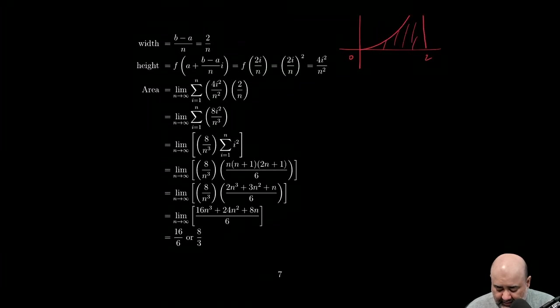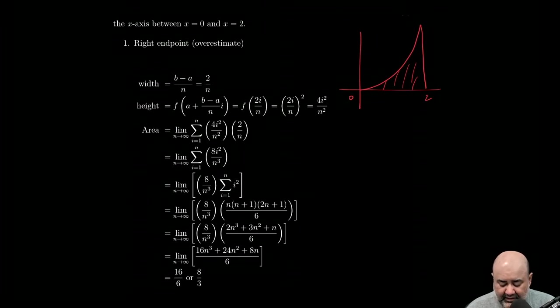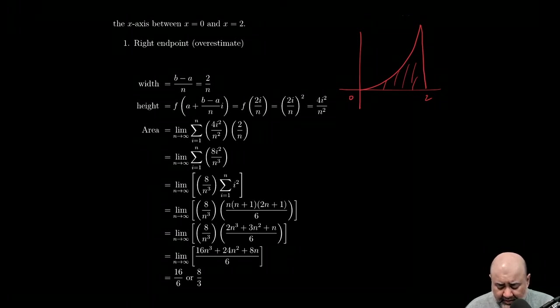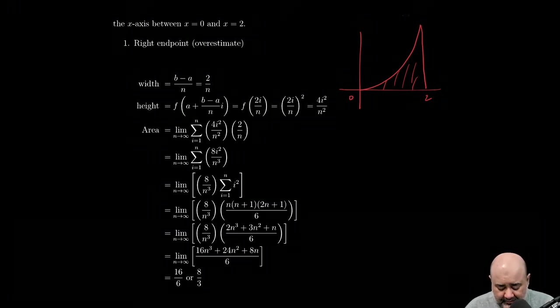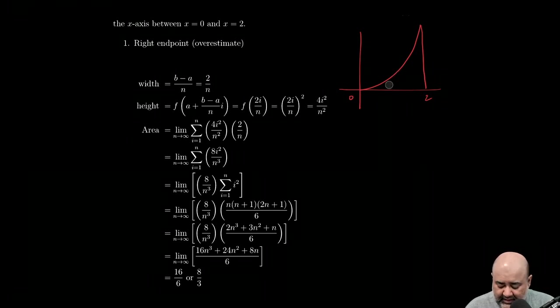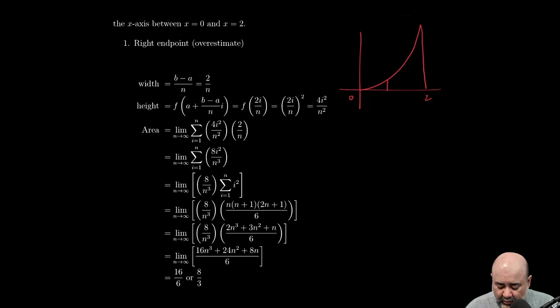First off, we need to find the width. The width will be the upper limit minus the lower limit over n. But we don't know what the number of subdivisions is, so we'll just leave that as n. So b is 2 minus 0 is a over n. Well, that's just 2 over n. So each of the rectangles that we place in here will have a width of 2 over n.